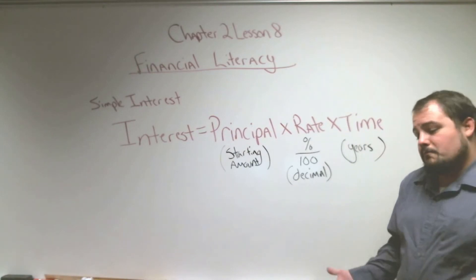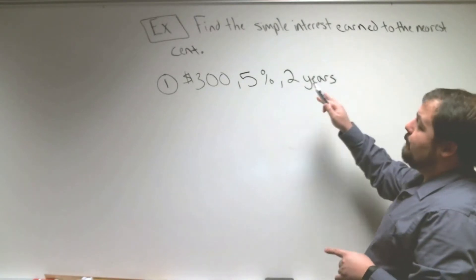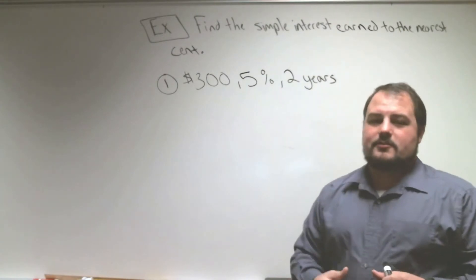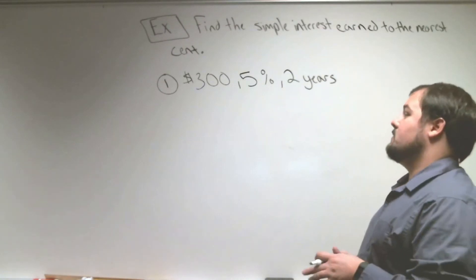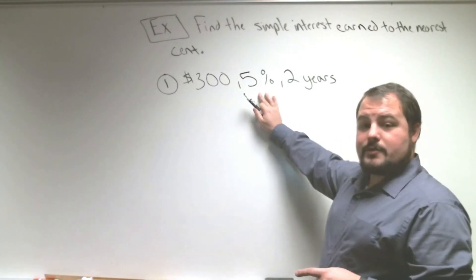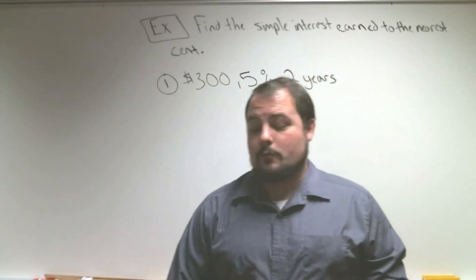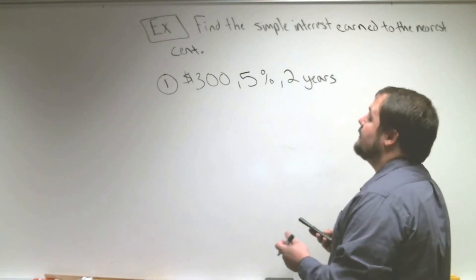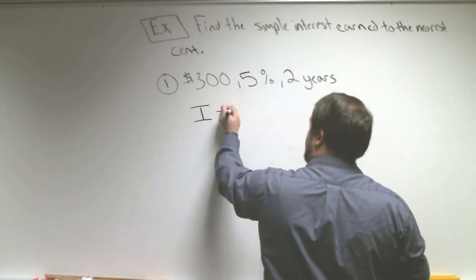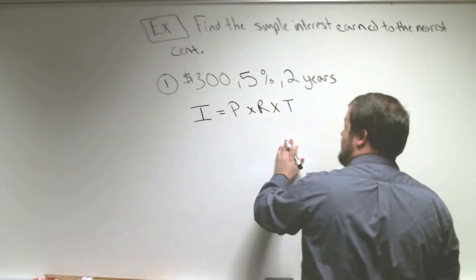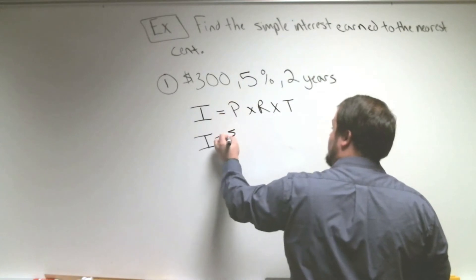Let's look at a few examples. For our first example, we're going to find the simple interest earned from putting $300 into the bank. Interest is kind of like free money given back to us from the bank because they invest our money into different things. So if we put $300 in the bank, we get a 5% interest rate, and we leave it in the bank for two years, we'll see how much free money or profit we're going to make. We use the simple interest formula: interest equals principal times rate times time.